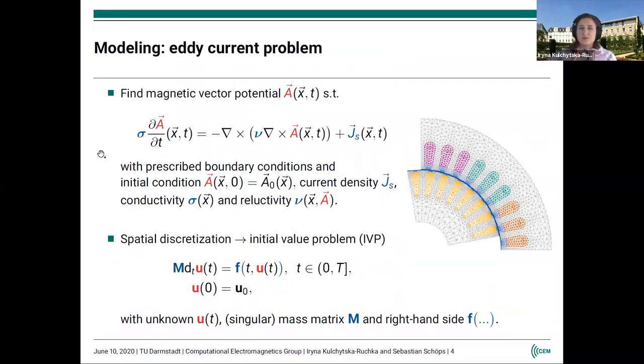About modeling, the problem that we are actually dealing with is called the eddy current problem with respect to the unknown magnetic vector potential A, which basically describes the magnetic fields in the motor. It is a partial differential equation, first order in time and second order in space. This is the curl curl operator. The input is given by the current density Js. This equation is usually non-linear. The non-linearity comes from the relativity function μ, and σ is the conductivity.